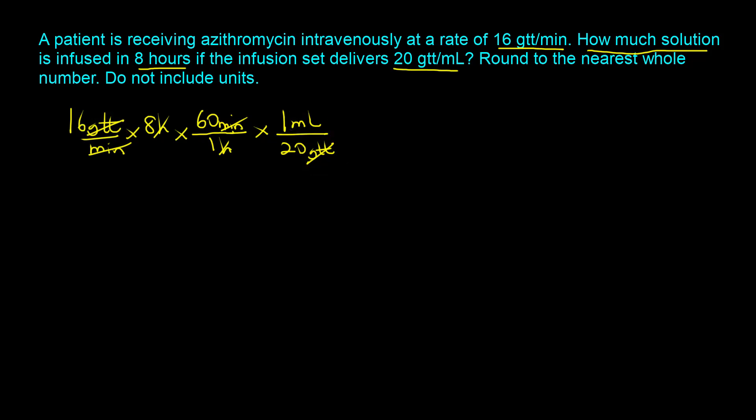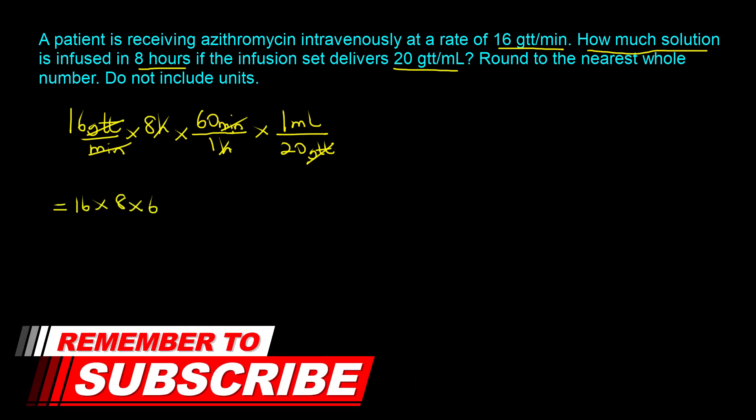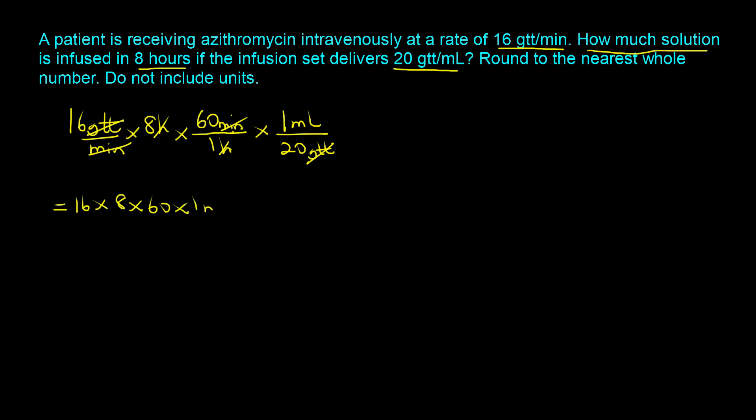The next step will be to take all the terms in the numerator. We'll have 16 times 8 times 60 times 1 milliliter, and we divide that by everything in the denominator, so we'll have 1 times 20. If you go ahead and do the math, we end up with 384.